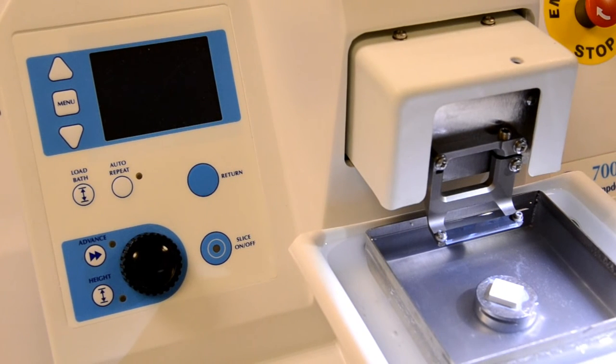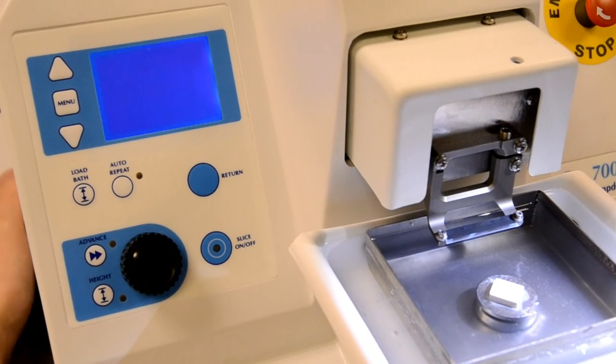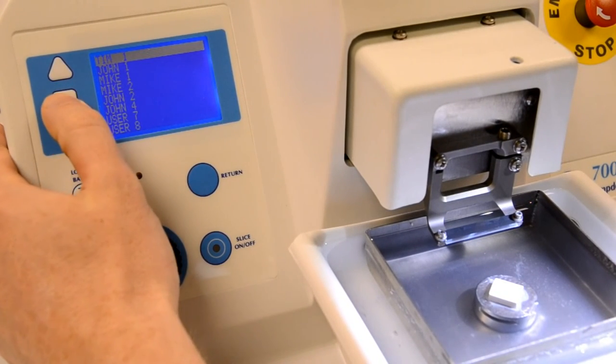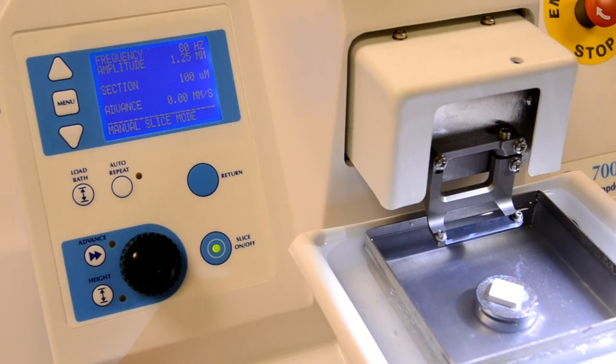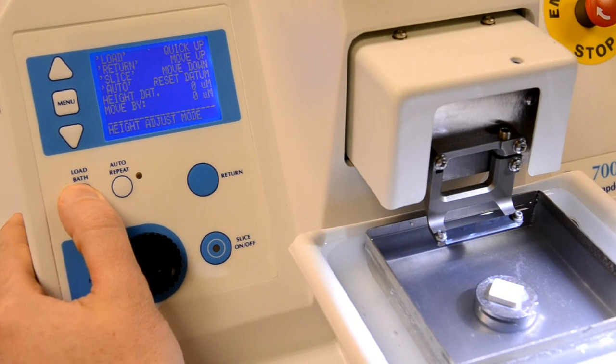When the instrument is switched on, select the preferred user or press the menu key to reach the normal operating screen. Note that the slice on-off key is now illuminated green and the display shows the operating parameters with advance speed shown as 0 millimeters per second.